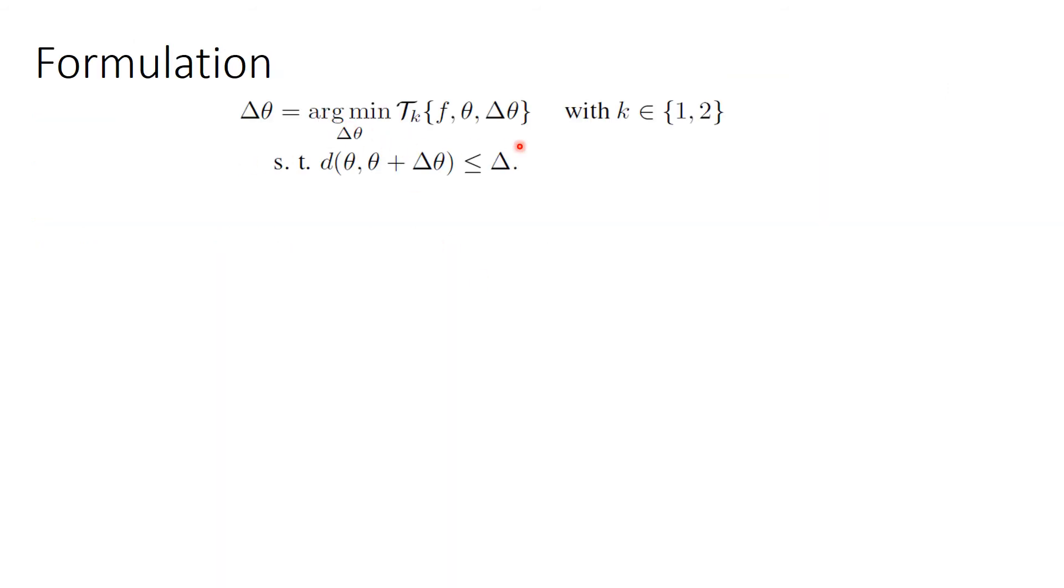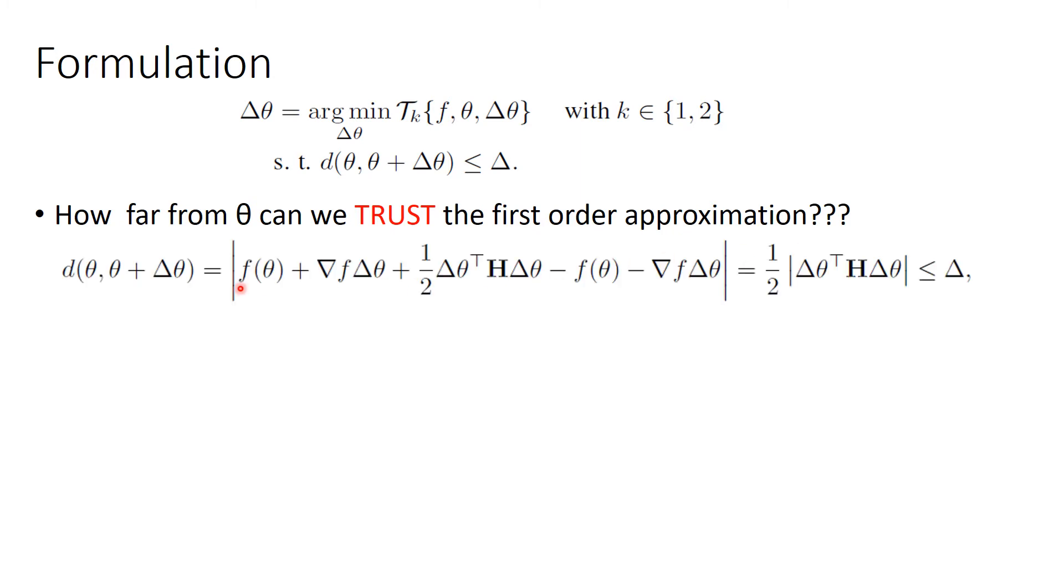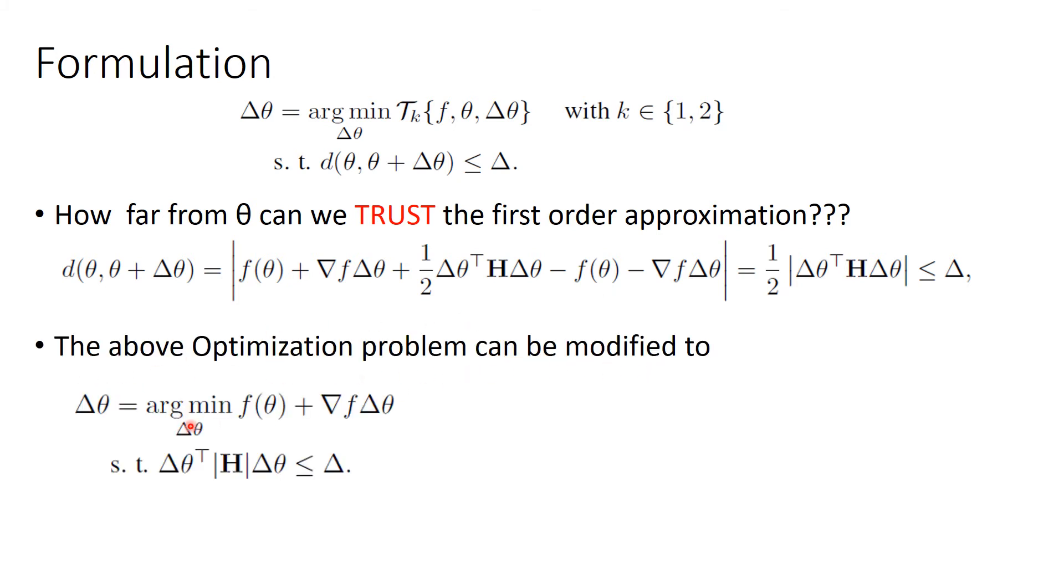This optimization problem can be formulated as follows. Now, how far from theta can we trust the first order approximation? The distance measure should contain the second order information. To do this, we subtract the first order Taylor approximation with second order Taylor approximation. The above optimization problem can be modified to this expression.